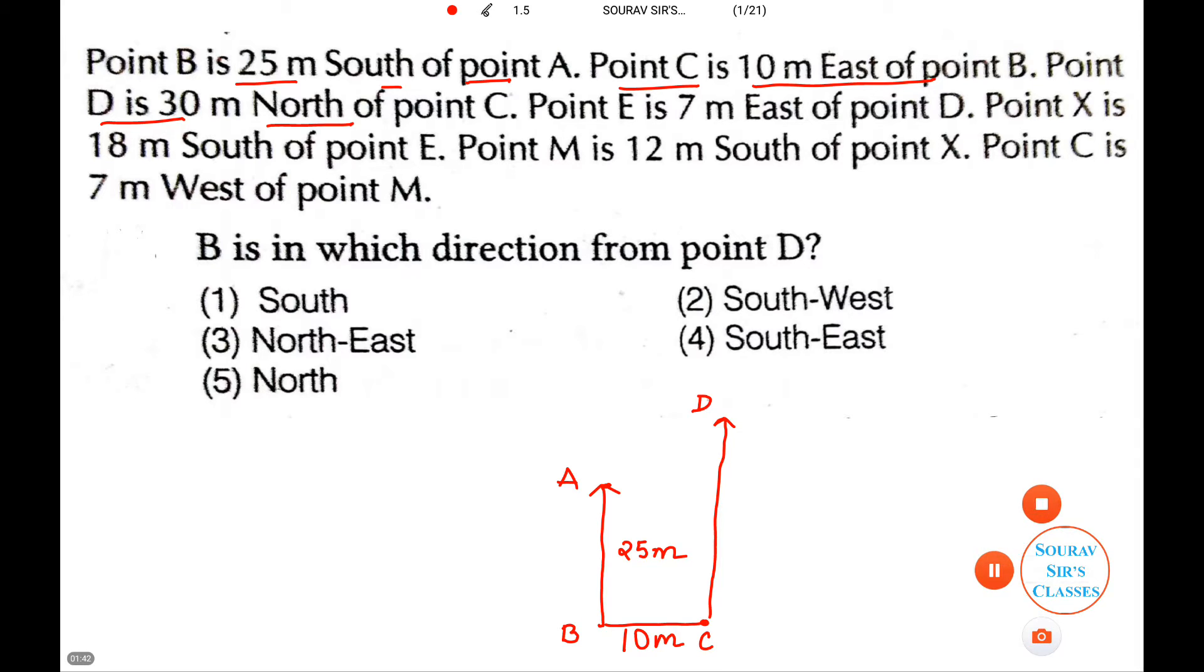Then we have point E is 7 meters east of point D. So 7 meters east, so this is 7. Okay, let me mark the direction first for you. So this is north, this is south, this is east, this is west. And based on this I am drawing it.